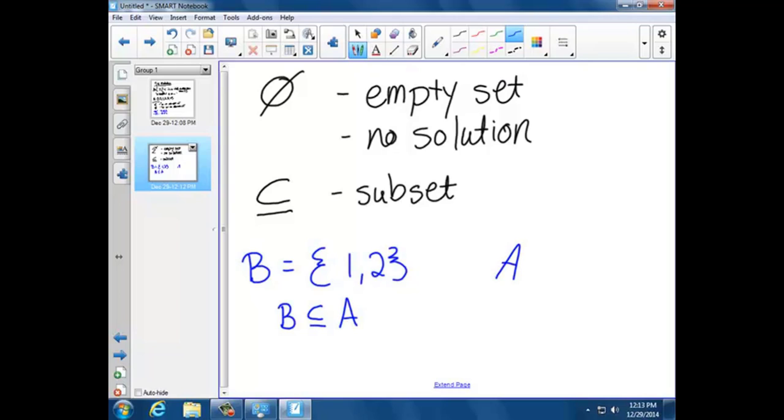Because remember A was 0, 1, 2, 3, and 4. Since everything in B is in A, we would say B is a subset of A.